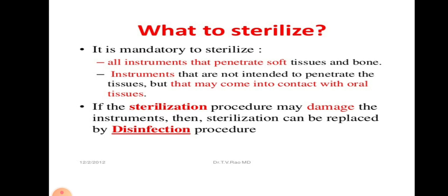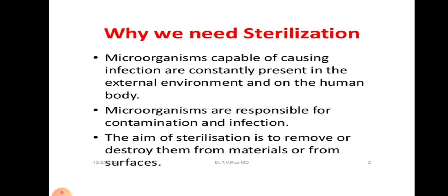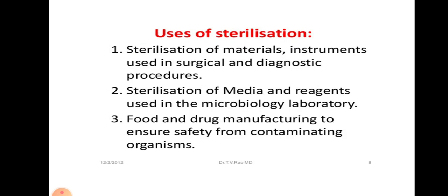What to sterilize? It is mandatory to sterilize all instruments that penetrate soft tissues and bone, and instruments that are not intended to penetrate the tissue but may come in contact with oral tissues. If the sterilization process may damage the instruments, then sterilization can be replaced by disinfection. Why we need sterilization? Microorganisms capable of causing infection are constantly present in the external environment and on the human body. Microorganisms are responsible for contamination and infection. The aim of sterilization is to remove or destroy them from materials or from surfaces. Uses of sterilization include sterilization of materials and instruments used in surgical and diagnostic procedures, sterilization of media and reagents used in the microbiology laboratory, and food and drug manufacturing to ensure safety from contaminating organisms.